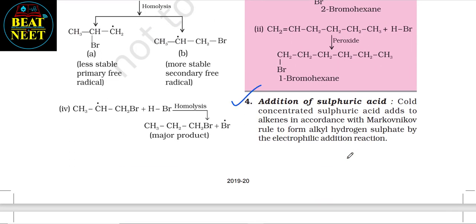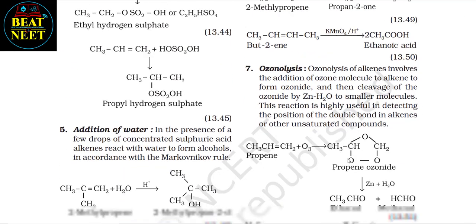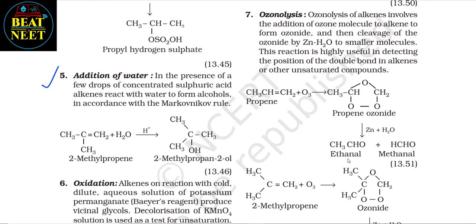Fourth — addition of sulfuric acid: concentrated sulfuric acid adds to alkenes in accordance with the Markovnikov rule to form alkyl hydrogen sulfate by electrophilic addition reaction. Here you can see the formation of ethyl hydrogen sulfate and propyl hydrogen sulfate.